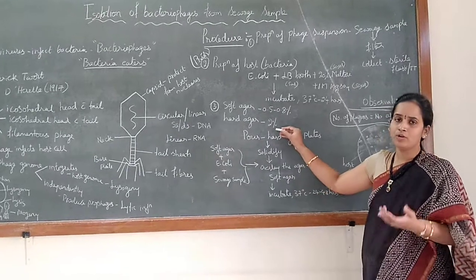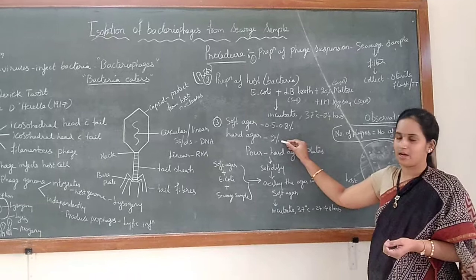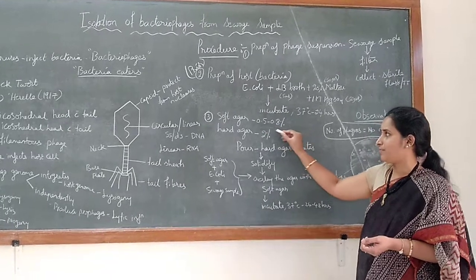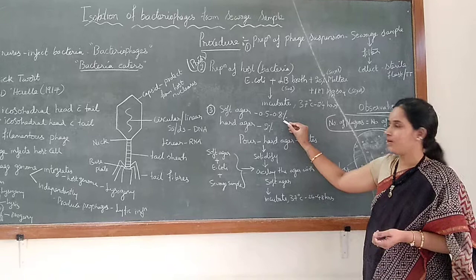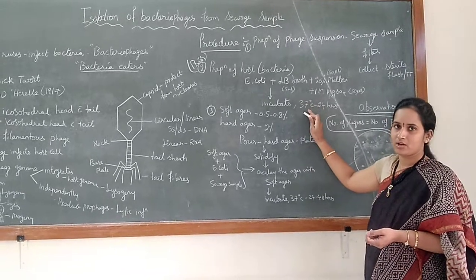So generally we know how to prepare the hard agar - roughly we will be adding 2% of agar. This you need to keep it in mind. So after that, always you need to add 0.5 to 0.8% of agar. Now all the preparations have been done.